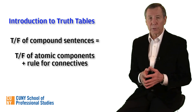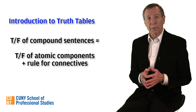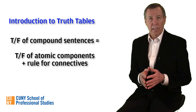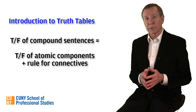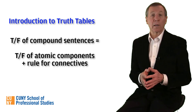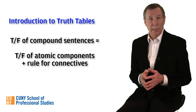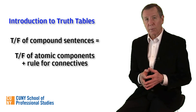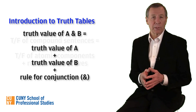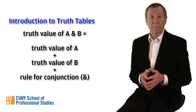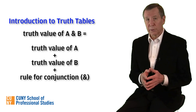Any larger sentence of sentential logic is composed of atomic sentences with sentential connectives. The truth value of a compound sentence depends only on the truth value of the atomic sentences that it contains and the rule for the connective or connectives that are used. In order to know the truth value of A ampersand B, for instance, you only need to know the truth value of A and the truth value of B, along with the rule for conjunction.